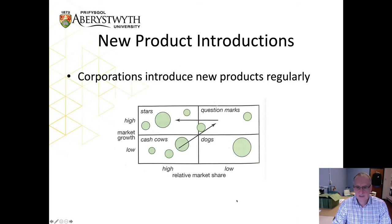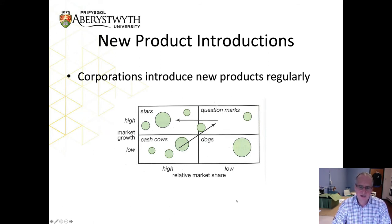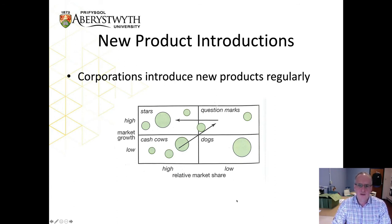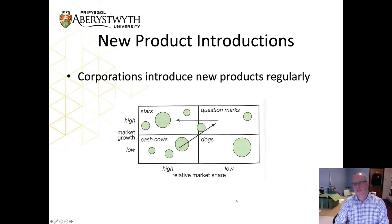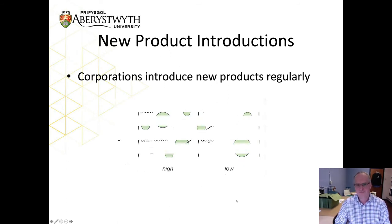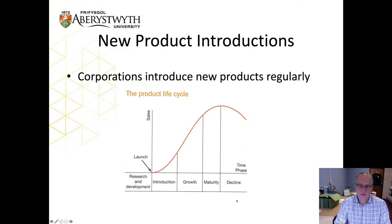The Boston Consulting Group matrix looks at market growth and relative market share. Cash cows in the bottom left have high relative market share and low market growth — they generate revenue. The dots represent revenue proportion by product range. Stars have high market growth and high share; question marks have high market growth but low share; dogs have low market growth and low share and are a drain on revenue. The idea is to use cash cows to fund question marks and stars, while divesting dogs.